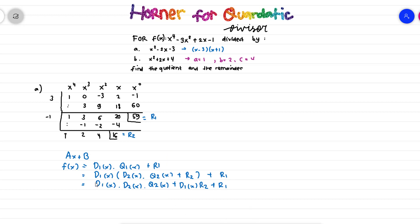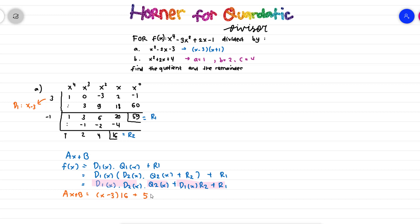So the formation is still d1 times d2 with last quotient q2, and the remainder is d1(x) times r2 plus r1. Here, d1(x) is x minus 3, and r2 is 16, and r1 is 59. So the remainder is (x minus 3) times 16 plus 59, which equals 16x minus 48 plus 59, giving us 16x plus 11. This is the remainder.